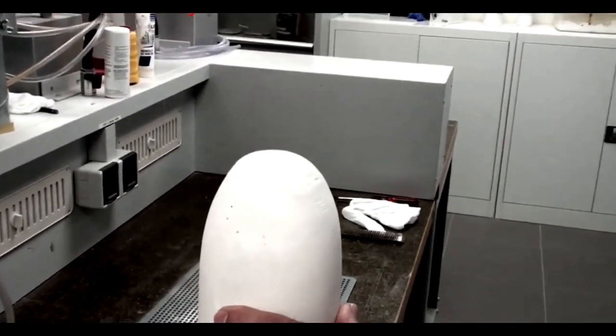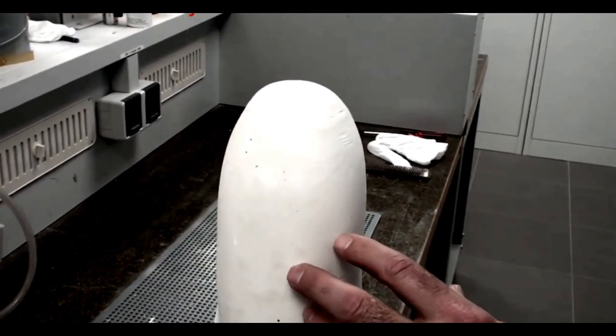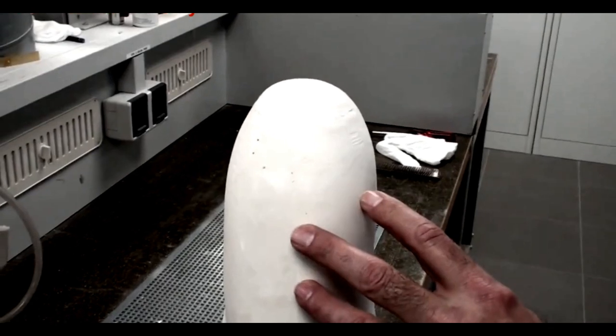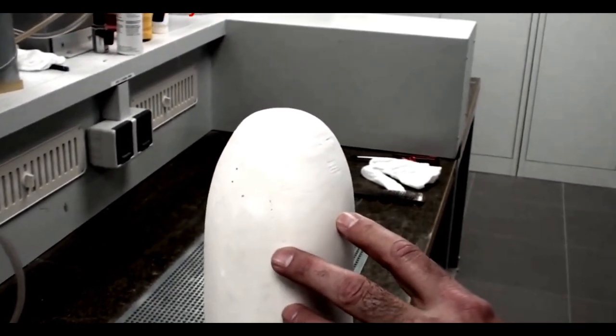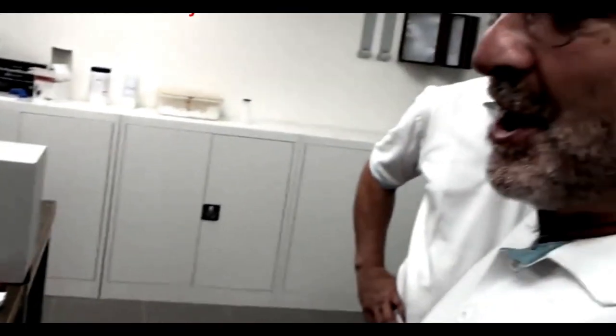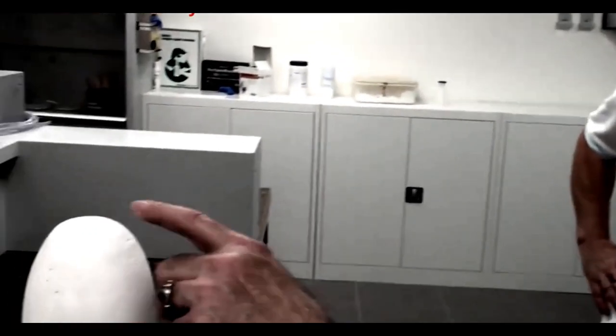One of the simpler things about the DVS system is that it requires no special plaster technique. You can design your socket in any style you're comfortable with. What's really important if you're using a total surface weight bearing approach is to do no reduction at the distal end.